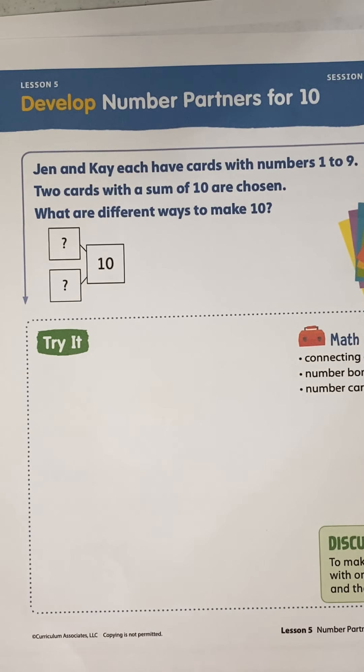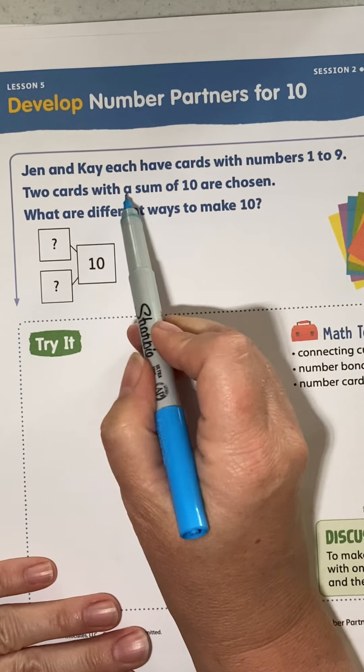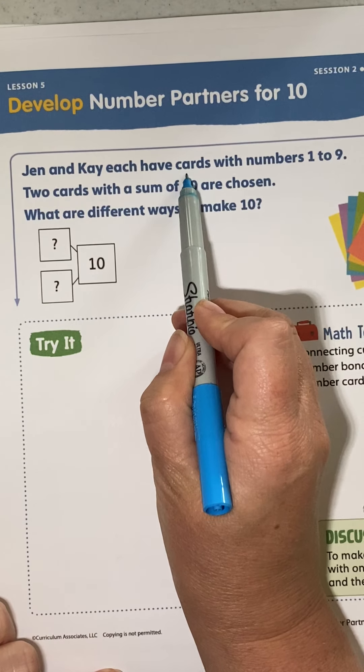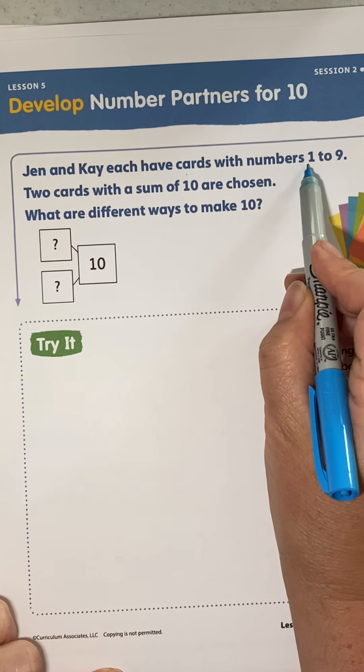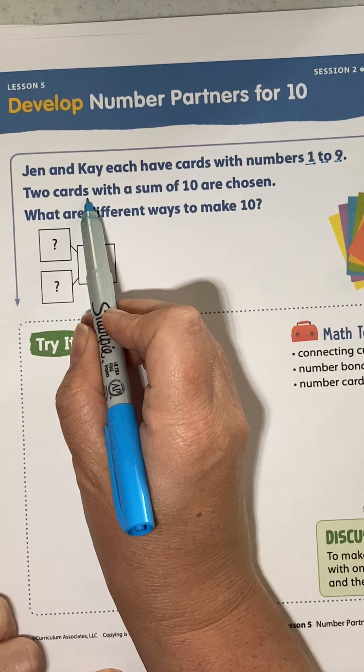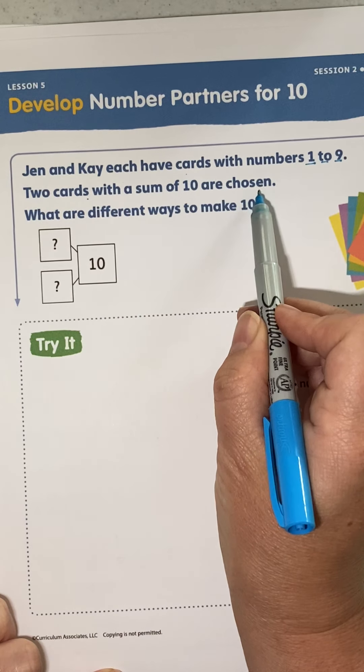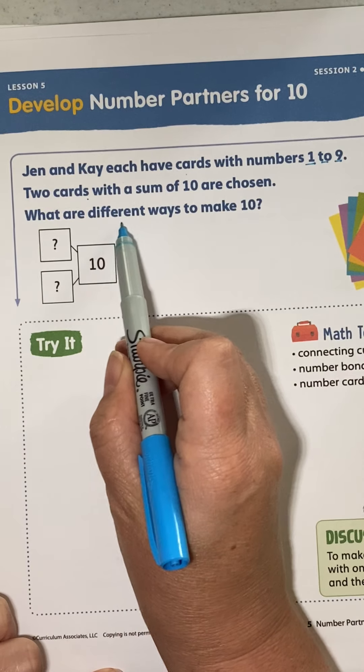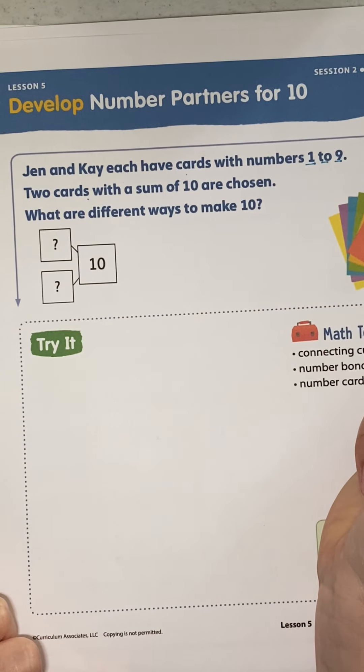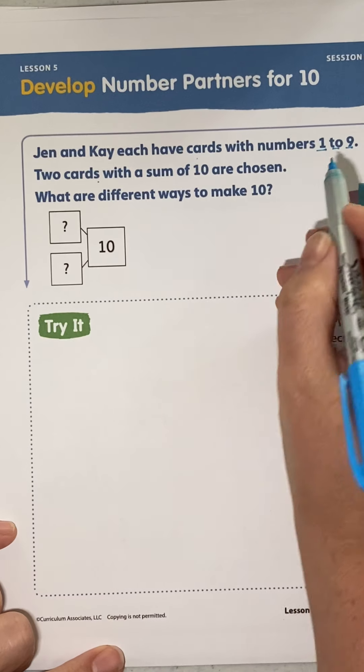Lesson 5, session 2, page 97. Jen and Kay each have cards with numbers 1 to 9. Two cards with a sum of 10 are chosen. What are different ways to make 10? Well, let's see.